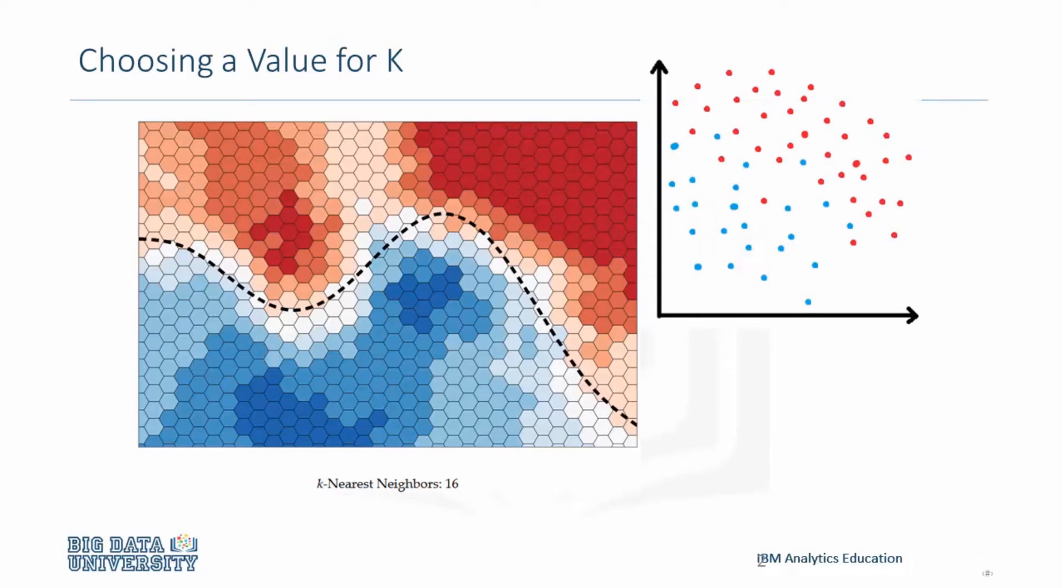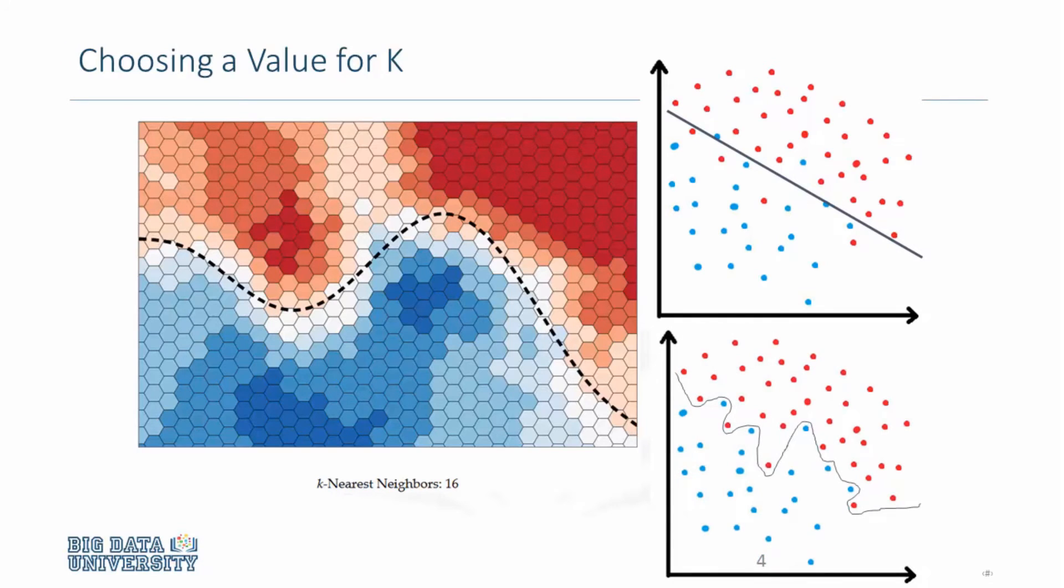Bringing back the model that we had from before, how do you think the line would look like in this case? There's a good chance that it might look something like this. This line is a lot more general than the one we saw from before.